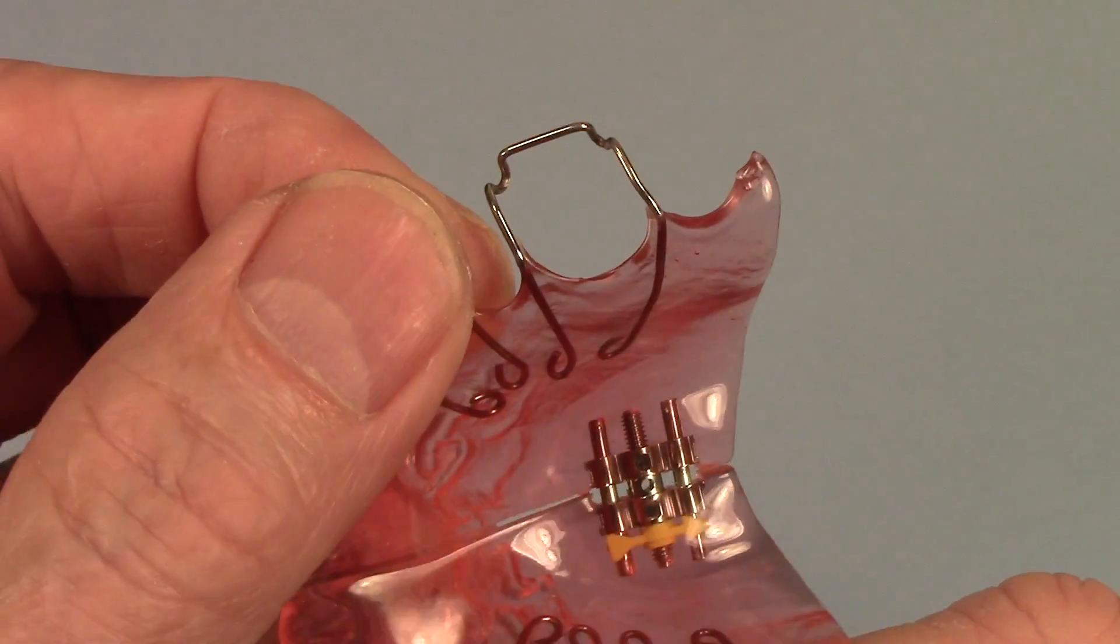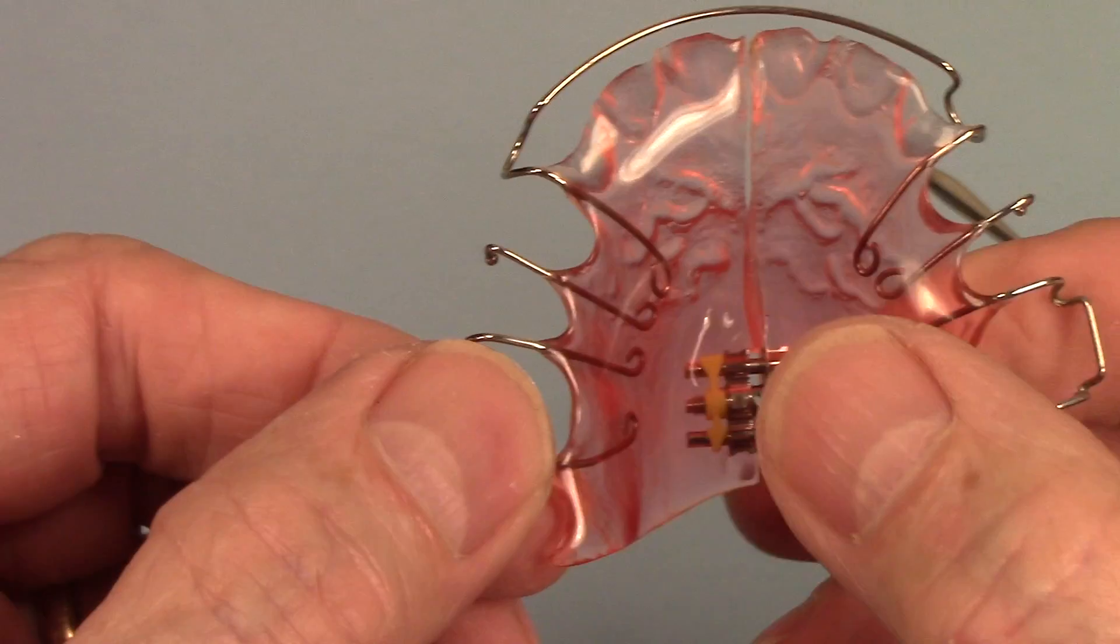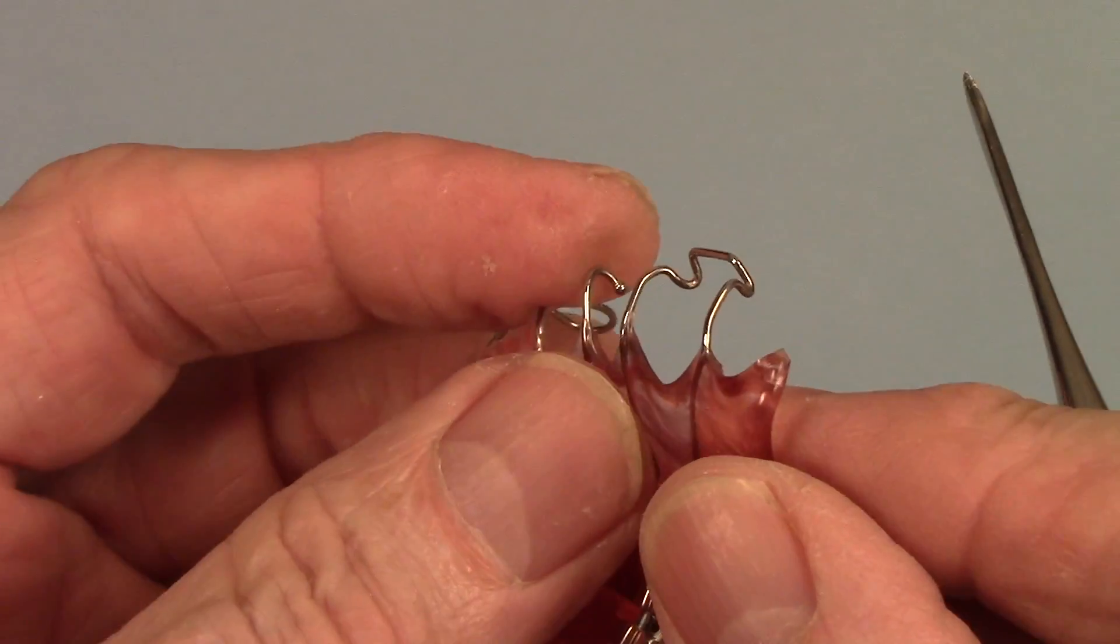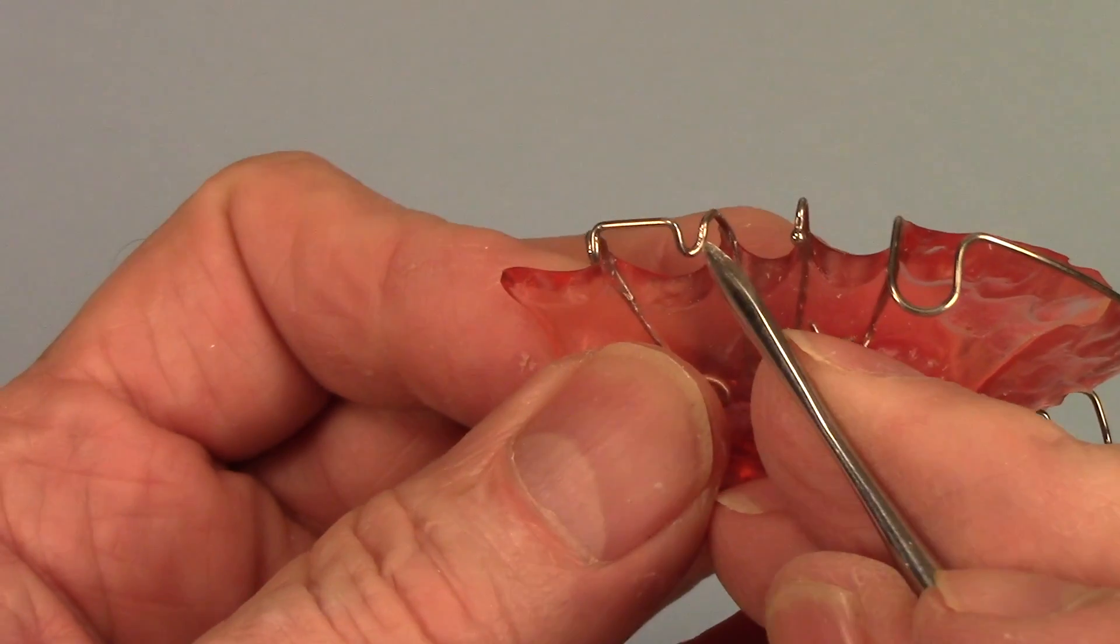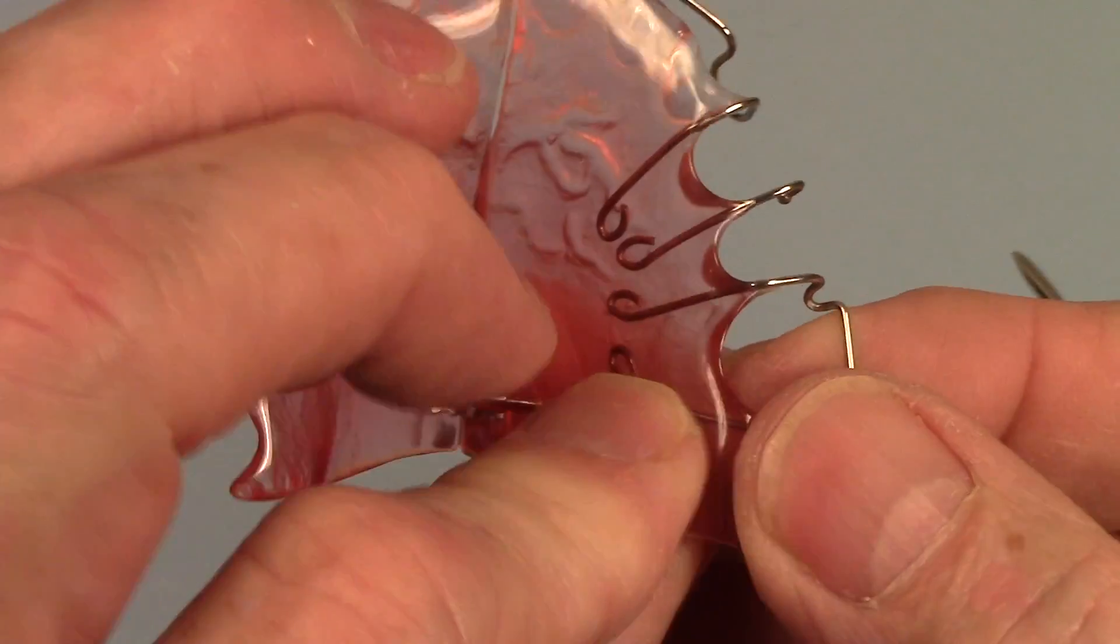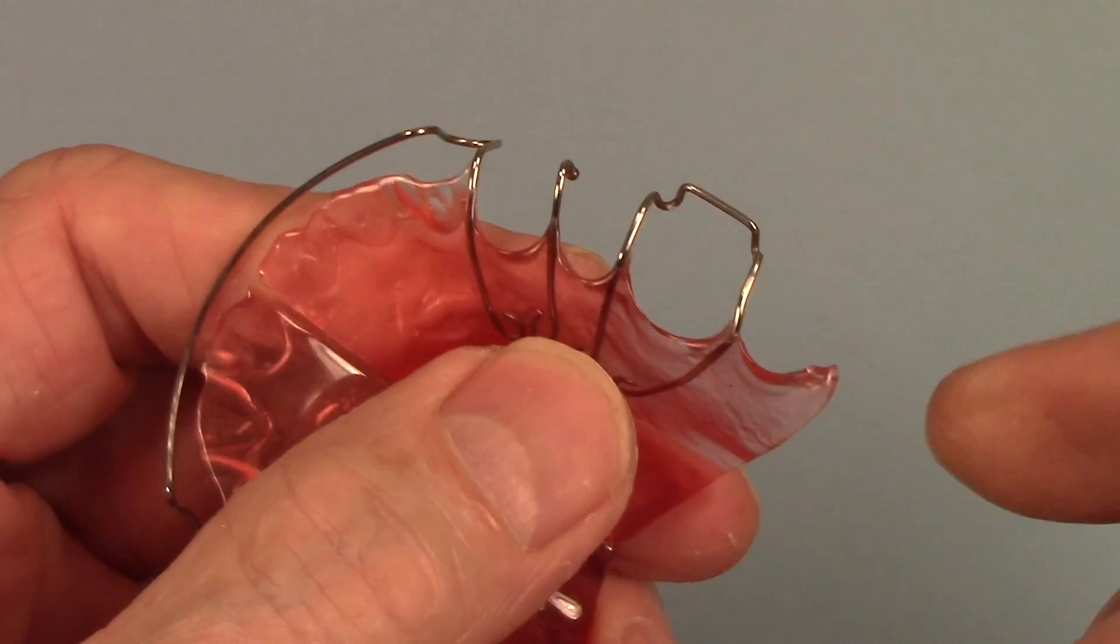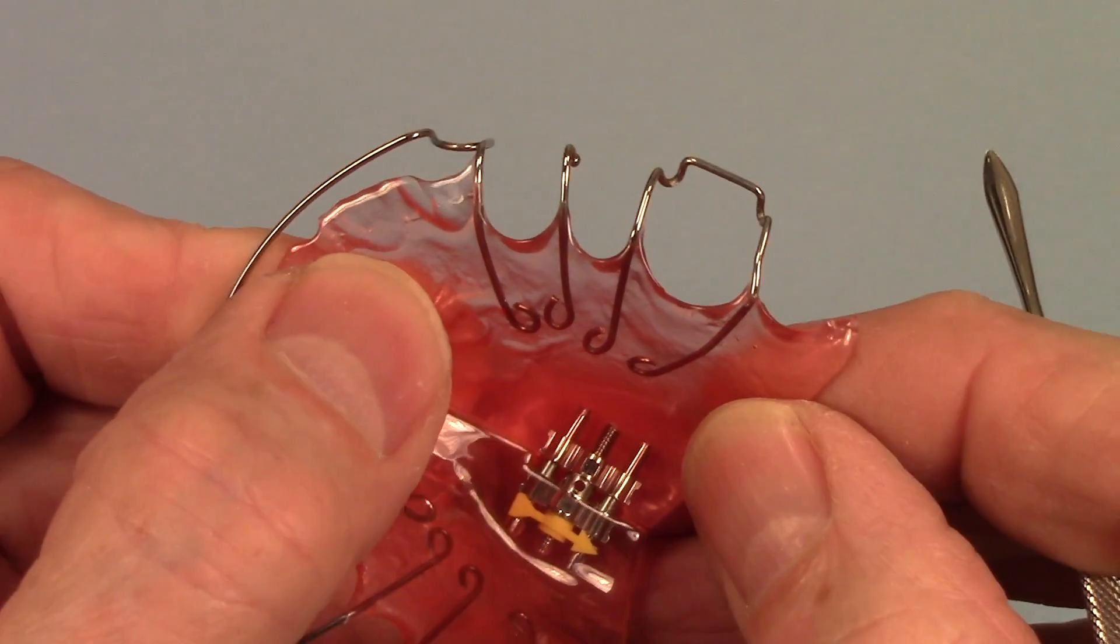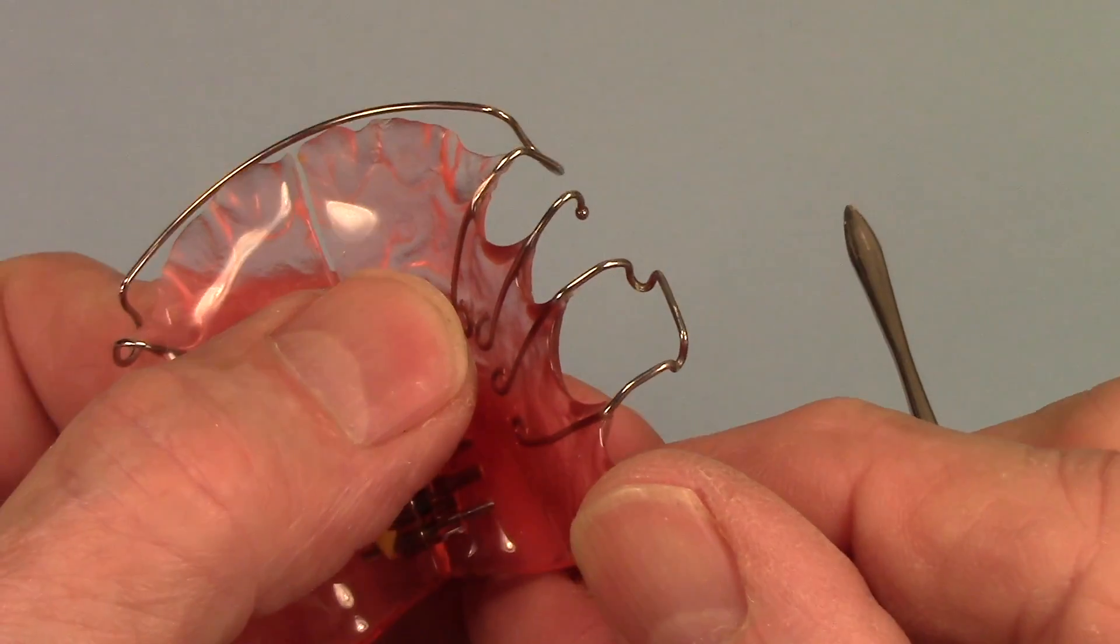Here's a basic Adams clasp. It's on an upper appliance. It's also got a ball clasp and a labial bow and a screw. This is a Schwartz appliance but we're just going to be talking about the Adams clasp. Now the Adams clasp, the active part of it, are these two loops. There's one on the mesial and one on the distal here and it's got a bar across which makes it handy where you can put your finger in there and pull up on the appliance and dislodge it. Now the purpose of any clasp is to hold the posterior portion of the appliance in place and the Adams clasp is a very good mechanism for that.